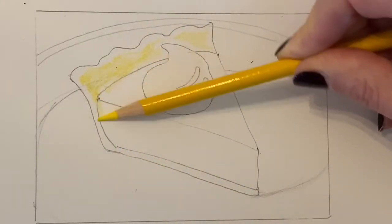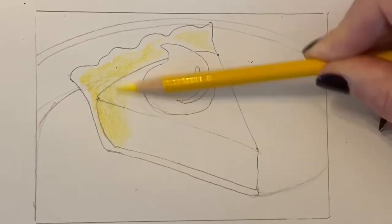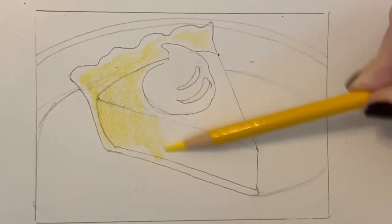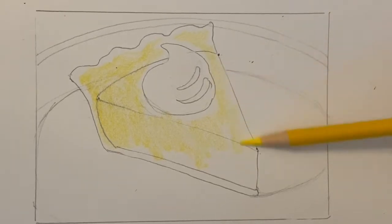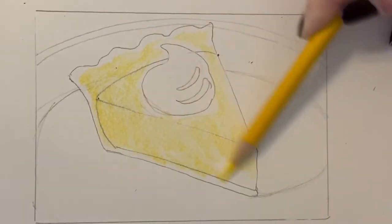Notice how I'm holding my pencil. I'm gripping it with my thumb and index finger and I'm holding it down away from the tip and using the side of the pencil to create broad strokes.